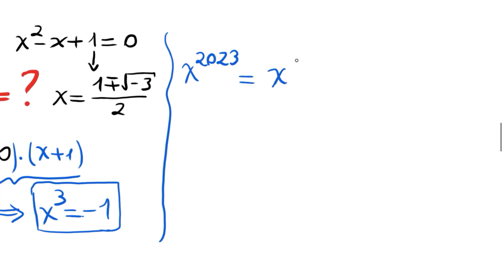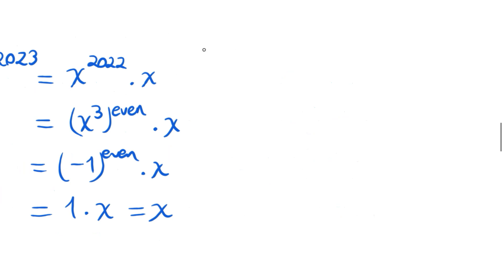This can be written as x to the 2022 times x, which is x cubed to some even power times x. Since x cubed equals minus 1, we have minus 1 to some even power times x, so we have 1 times x, that is x. Let's calculate x to the 2024.